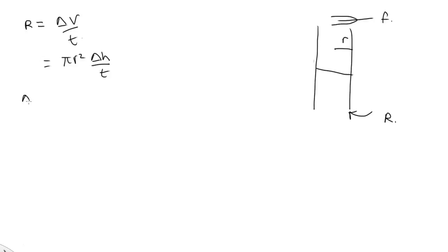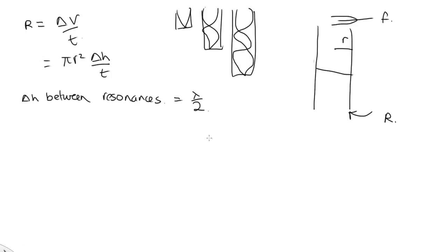And now the change in height between resonances, well, we have resonances like this at a quarter of a wavelength, and then at three quarters of a wavelength, and then at five quarters of a wavelength. But the difference between each of these resonances is equal to lambda over 2. So what we need to do is just replace delta h with lambda over 2.